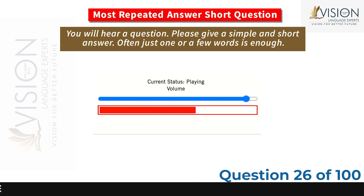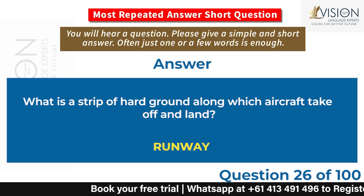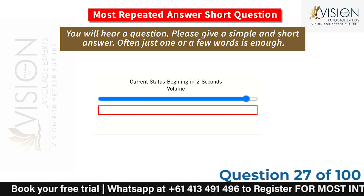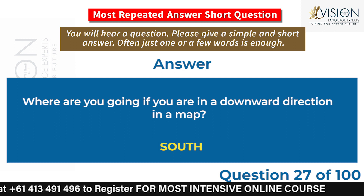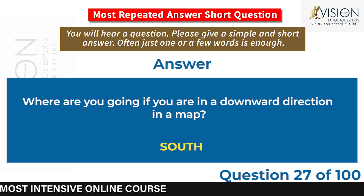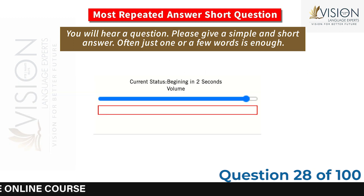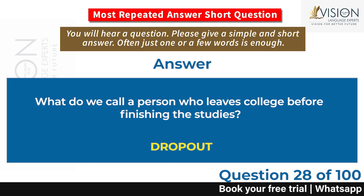What is a strip of hard ground along which aircraft take off and land? Runway. Where are you going if you are in a downward direction on a map? South. What do we call a person who leaves college before finishing their studies? Drop out.